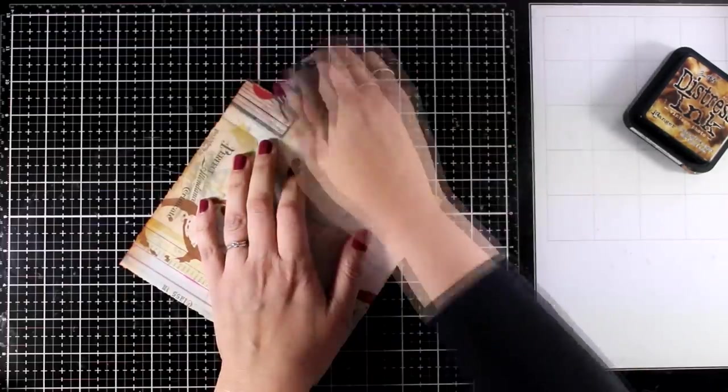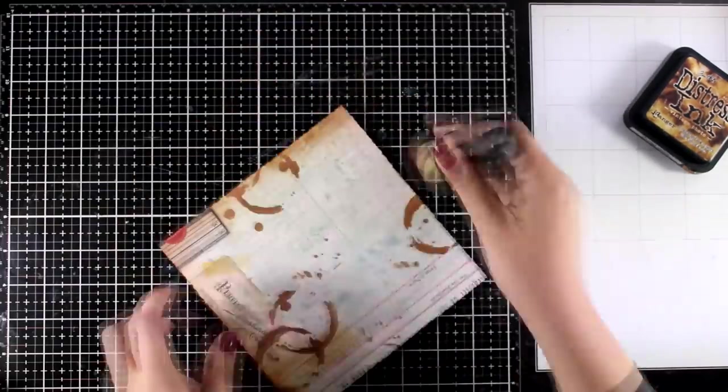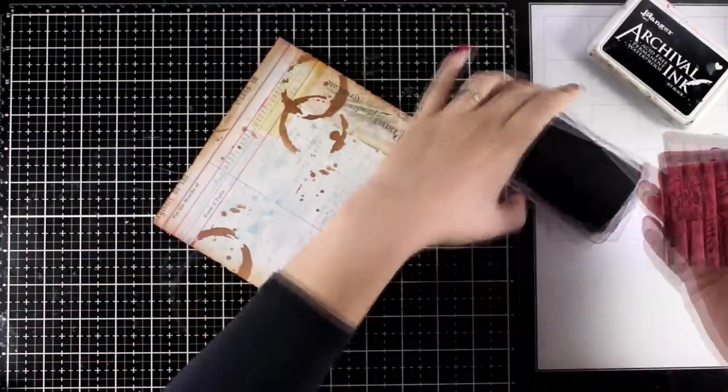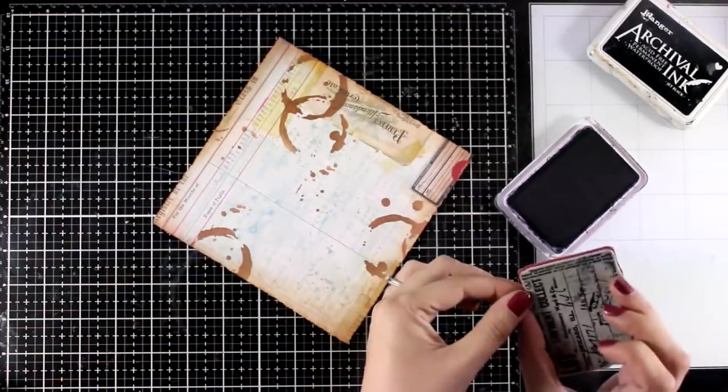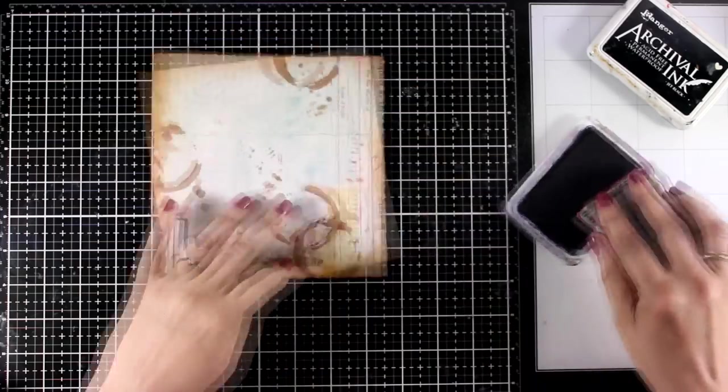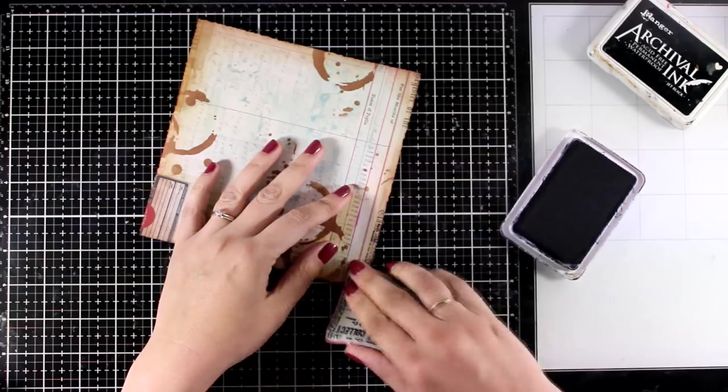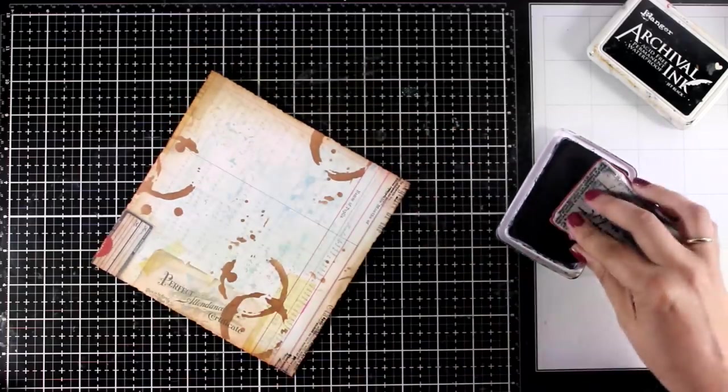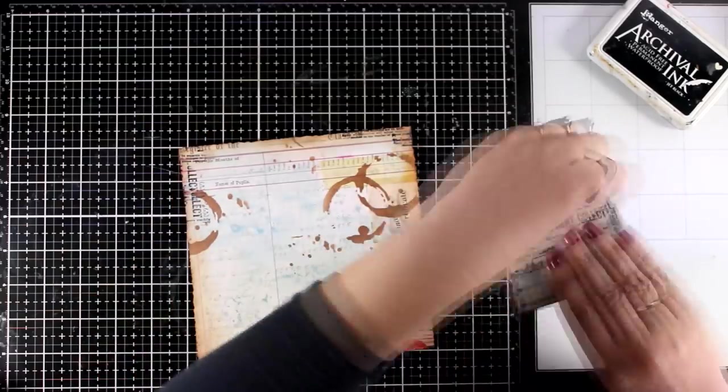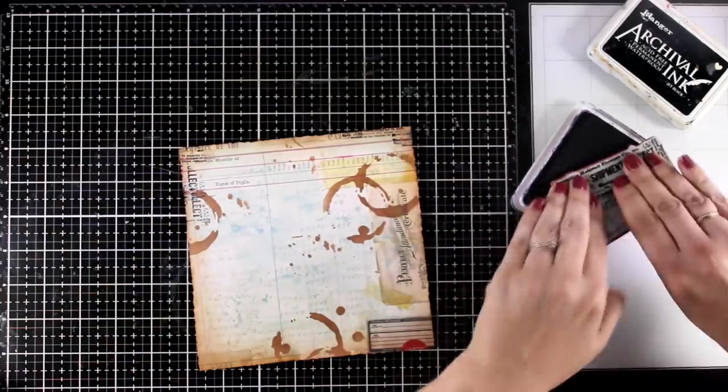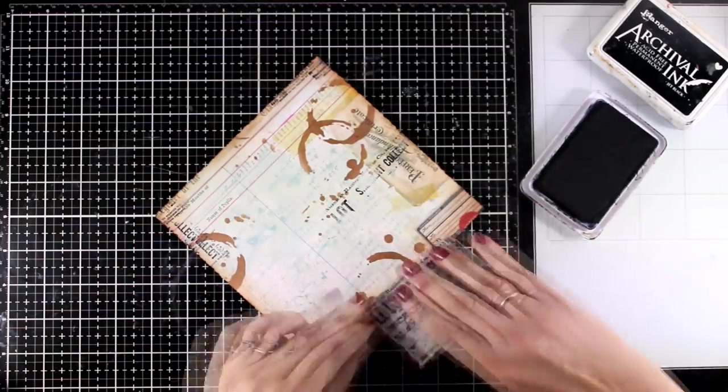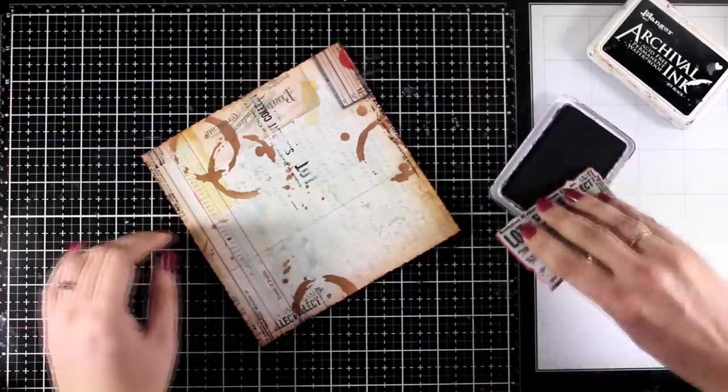I'm also going to ink up the edges. Again that's Vintage Photo. Since I went with a pattern paper for the background it does have some interesting elements back there. However I cannot stay away from stamping so in this case I'm just using a text stamp that I had for a long time. I think this is also from the Etcetera collection from one of Tim's stamps and I'm stamping with black archival ink mainly around the edges.